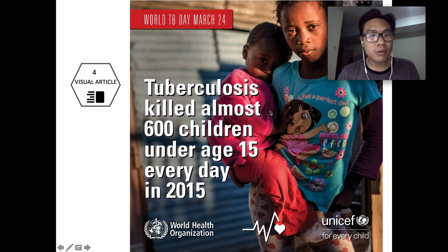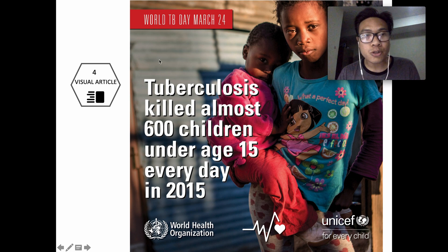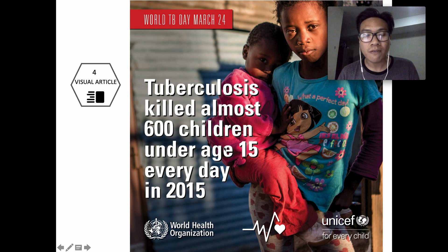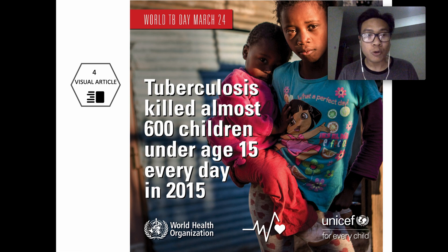Number four, visual articles. As you can see, there are two young children with very sad-looking faces, and there is only one sentence. This is the cover page of World TB Day, March 24. The information states: tuberculosis killed almost 600 children under age 15 every day in 2015. With one picture and one sentence, you can effectively communicate with your audience about the dire situation of tuberculosis among children. I think this is a very emotional way to communicate with your audience.